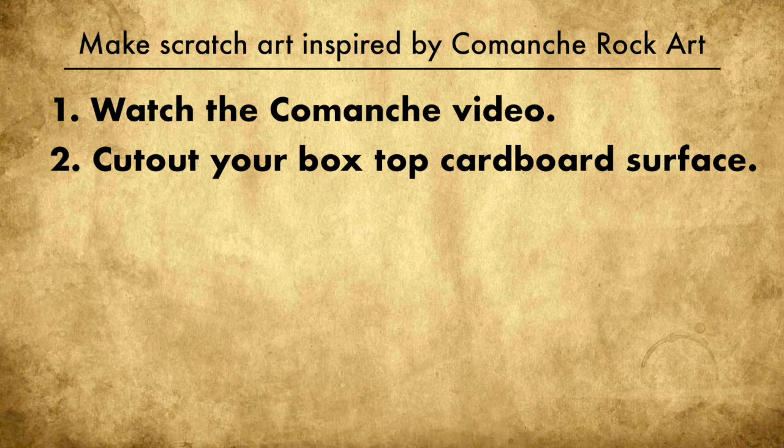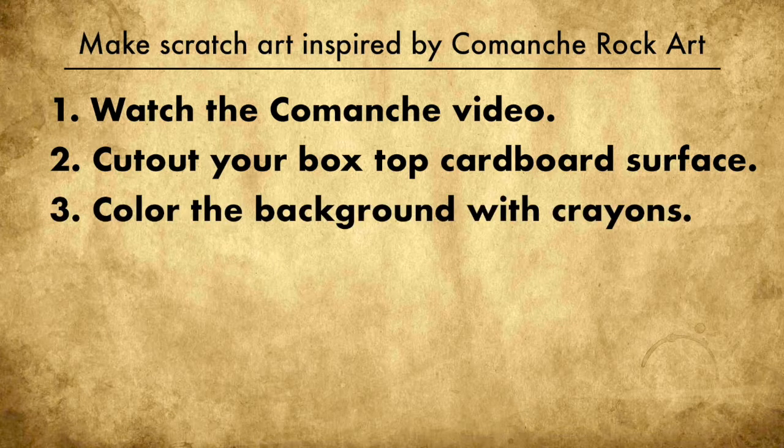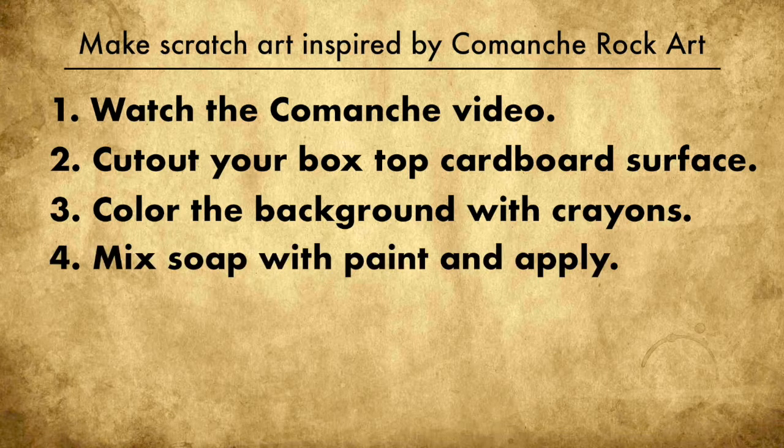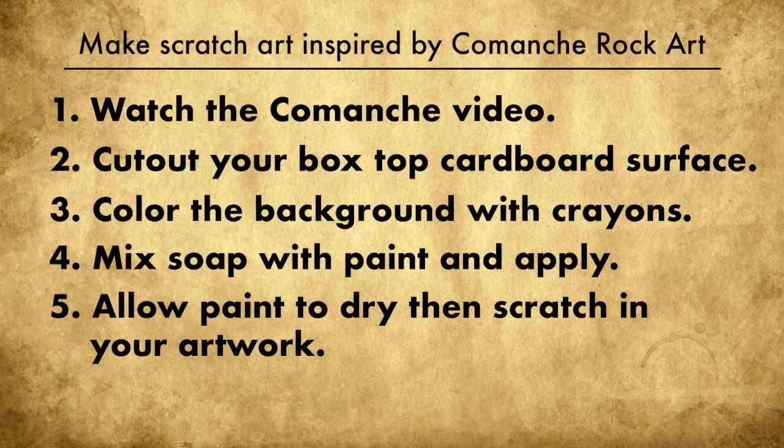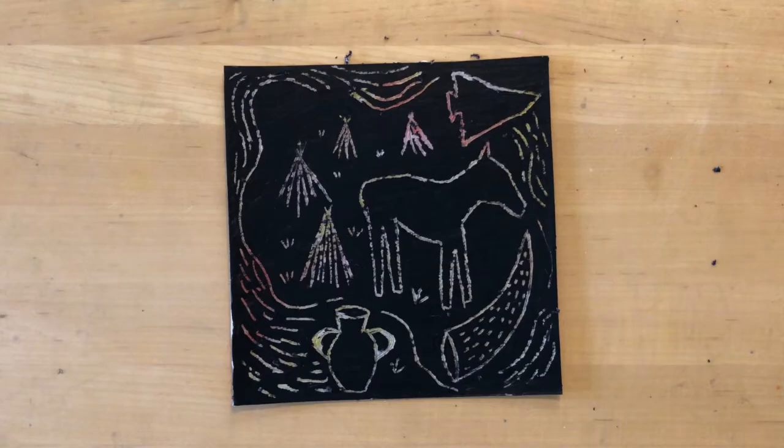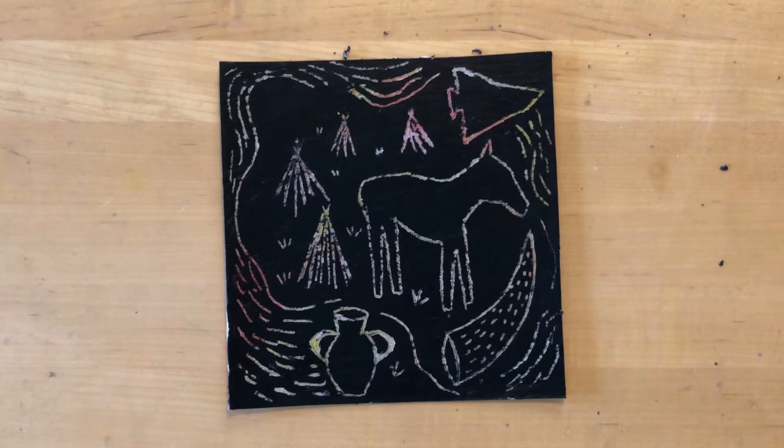In step 2 we'll cut out our box top surface. In step 3 we'll color the background with crayons. Then we'll mix soap with paint and apply that to our background. After your paint dries, we'll scratch in your artwork. Our final product will look something like this.